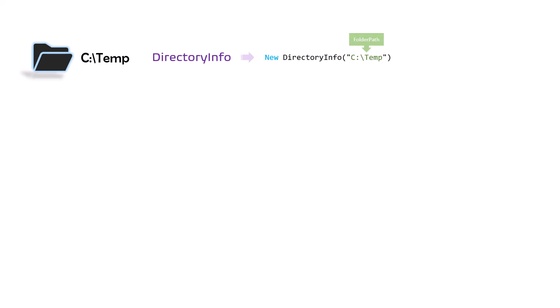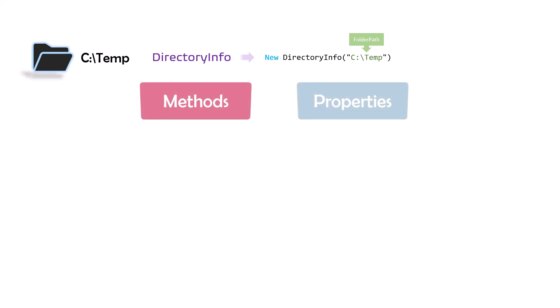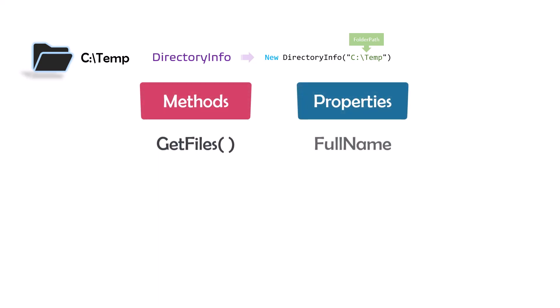DirectoryInfo has specific methods and properties — for example, the GetFiles method to get files from this folder, or the property FullName to get the full path of this directory, or many other methods and properties.